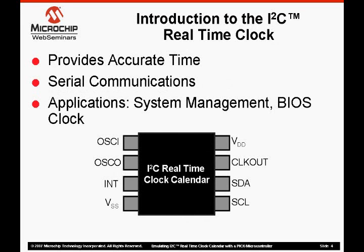So what does an I2C real-time clock do? There are two basic requirements for an I2C real-time clock: one, to provide an accurate time, and two, to be able to read and write the time and configuration data on the device through a serial communications protocol. In this case, we are going to be dealing with an I2C real-time clock, so we'll be talking I2C.